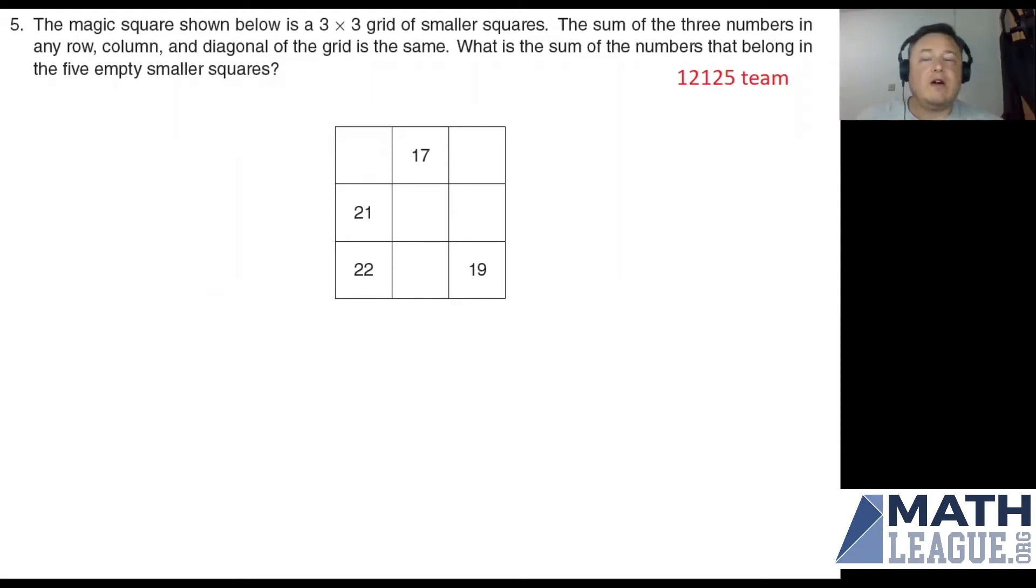So we've got a magic square. All the rows, columns, and diagonals add up to the same thing. So we just need to figure out what the missing pieces are. Interestingly enough, we actually have enough information just from the entries that are already here to figure out what's going on.